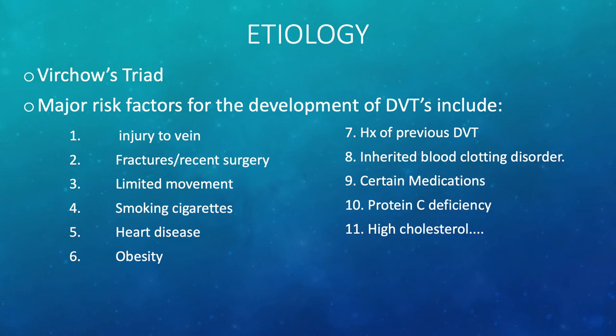There are three crucial factors that play a role in the formation of DVTs, known as Virchow's Triad. The three components are venous stasis, vascular injury, and hypercoagulability. Major risk factors for DVT development include injury to a vein, fractures, limited movement, heart disease, obesity, and a history of previous DVT.